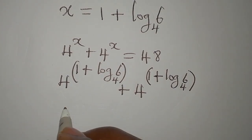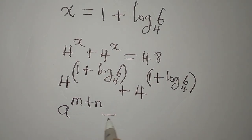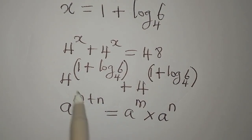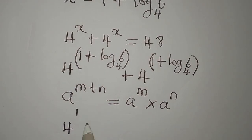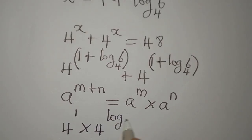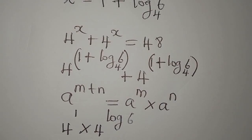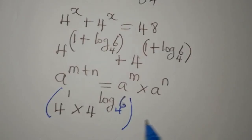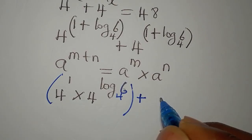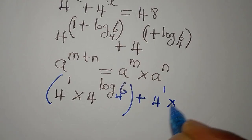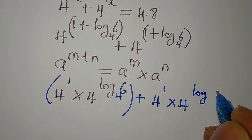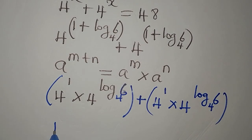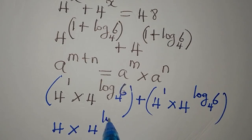Now remember the law of indices: a to the power of (m + n) equals a to the power of m times a to the power of n. We can apply this here to express 4^(1 + log₄6) as 4 to the power of 1 multiplied by 4 to the power of log 6 to base 4. This appears in two places.